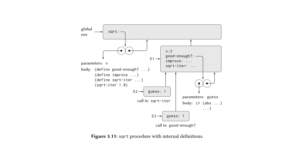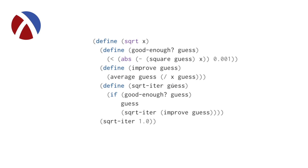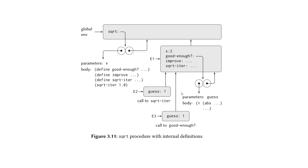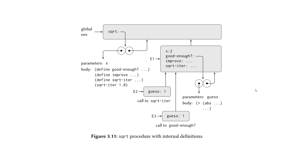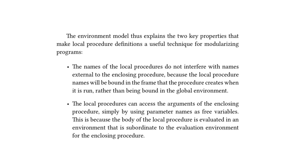When we make a call to square-root, we set up frame e1. The first three expressions when evaluated give us our procedures: good-enough, improve, and square-root-iter. The final expression calls square-root-iter, which sets up the next frame e2 — and all subsequent frames are enclosed within e1. So what this final subsection is highlighting is that when we have procedures using internally defined procedures, we end up with a frame enclosed within the global environment, and all subsequent frames used for calculations are enclosed within that frame. For example, square-root-iter's initial guess is 1; then it calls good-enough, setting up frame e3, also enclosed within e1 — and it continues making calls until the tolerance predicate in good-enough is satisfied.